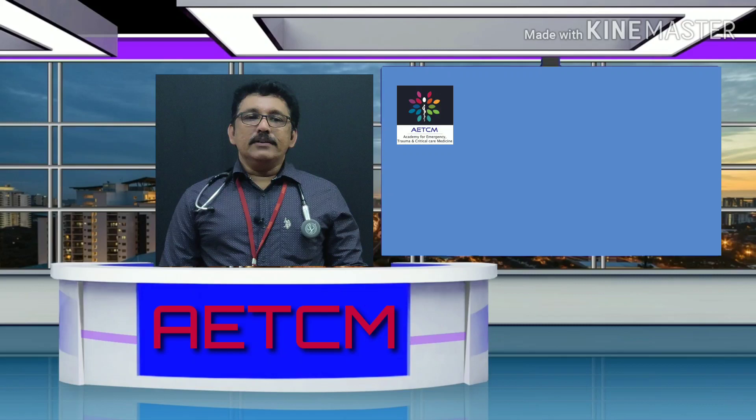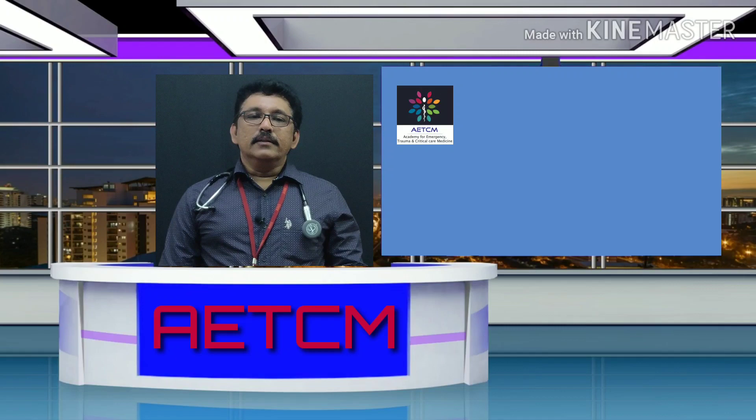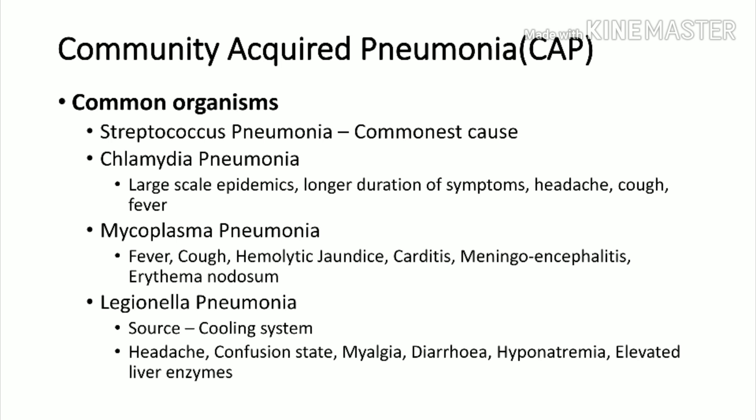Now we will see what are the common organisms behind community acquired pneumonia. The most common bacterial organism is Streptococcus pneumoniae. Chlamydia pneumoniae and Mycoplasma are other organisms. Legionella is another organism. The clinical findings are a little different in these atypical pneumonias.